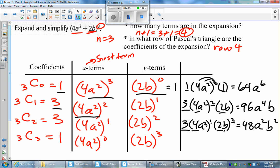Finally, last term here, we have 1 times 4a squared to the power of 0. That's just 1, and then 2b to the power of 3. So we have 1 times 1 times 2b to the power of 3. Now 2 cubed gives you 8, and then b cubed. So here are my terms of my expansion.